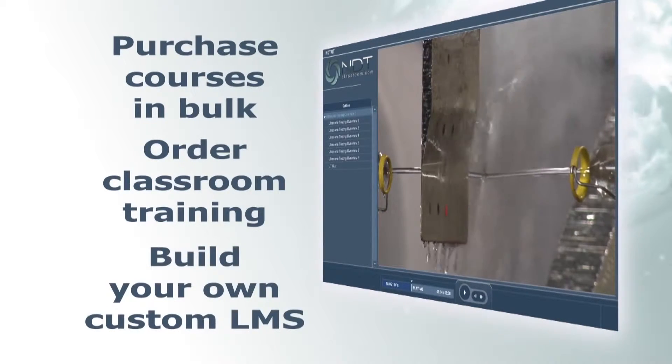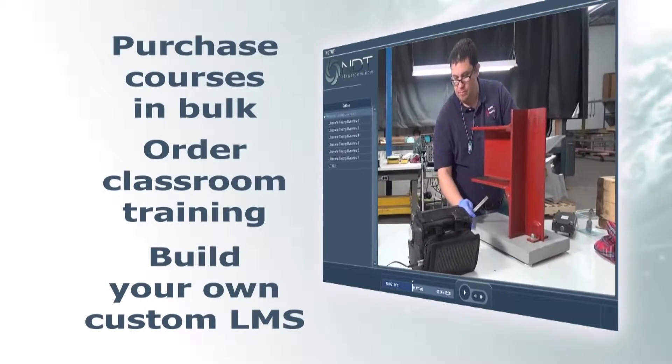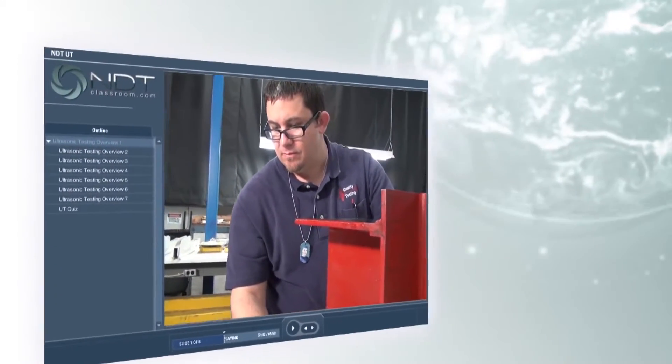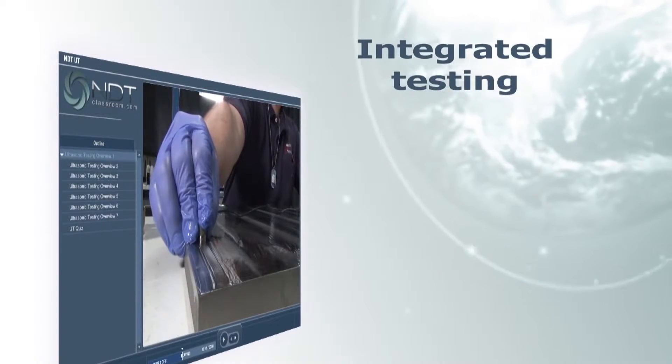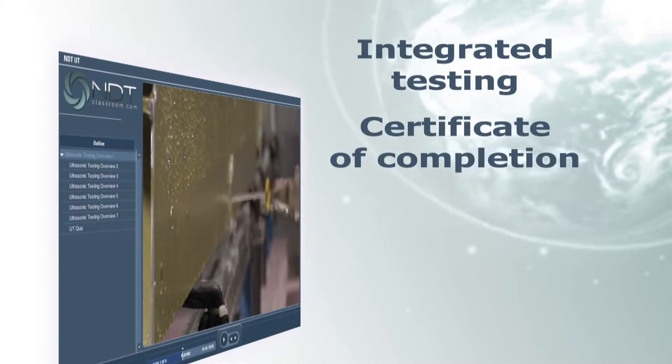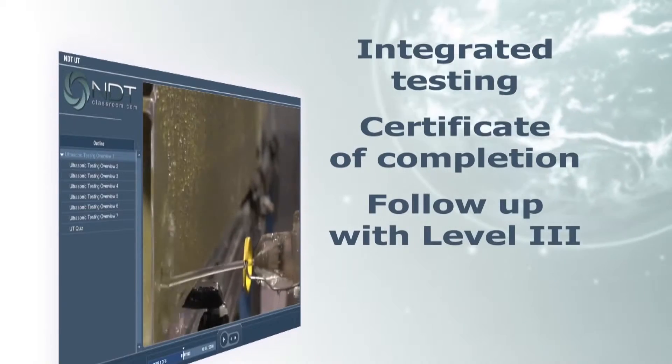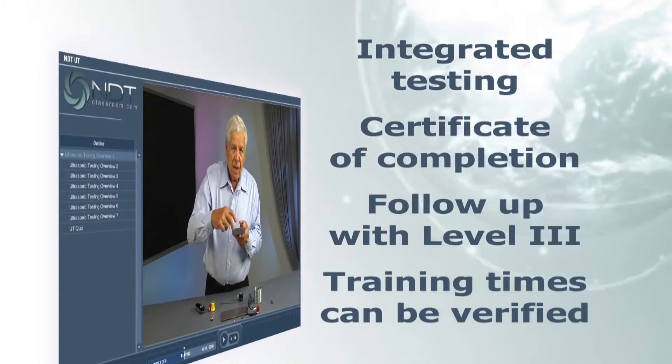Or build a company-specific learning management system for tracking completion and amount of training time. If you already have company training courses, ndtclassroom.com is a perfect fit. Your employees can complete their theory training with integrated testing and a certificate of completion. This can be followed with your company's Level 3, providing practical training and testing, and all of your minimum theory training times can be verified.